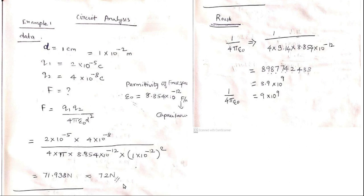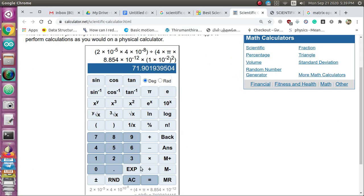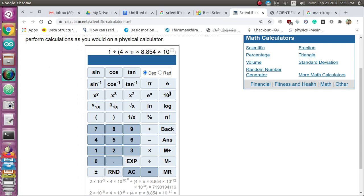I have given a rough calculation here. In Coulomb's law problems, you will be using 1 by 4πε₀ constantly. Instead of calculating this each time and substituting it, you can directly substitute the approximate value 9×10⁹. Let me calculate the value of 1 by 4πε₀: typing 1 divided by 4π × 8.854×10⁻¹².